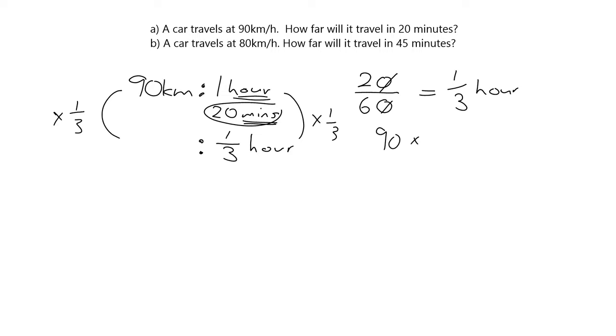90 times by 1 over 3. Well, it's 90 over 1 times 1 over 3. We can simplify and we'll get 30 over 1, which is just 30 kilometers. Okay, I want you to try the next one.